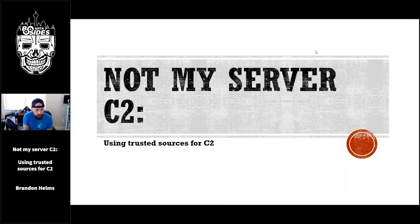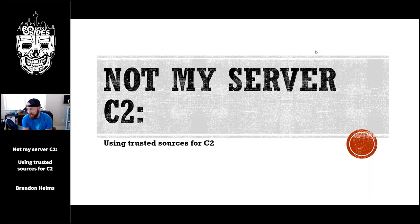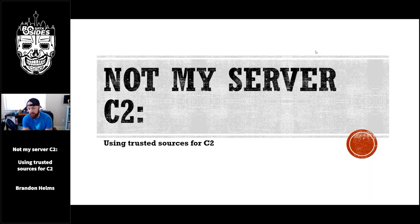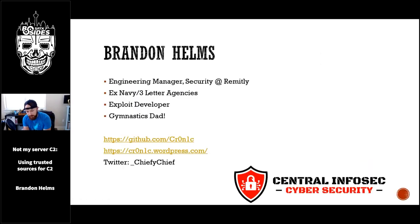This talk is 'Not My C2' — or 'Not My Server C2: Using Trusted Sources for C2.' Over the course of the last 15 years we've all built our own RATs, our own payloads, our own infrastructure, our own C2 architecture. It kind of evolves because at the end of the day it's that cat-and-mouse game of attacker versus defender. This talk focuses on how me and my team have evolved and how we've started using SaaS as our primary target for C2, and it goes through the different types of payloads we use for our engagements.